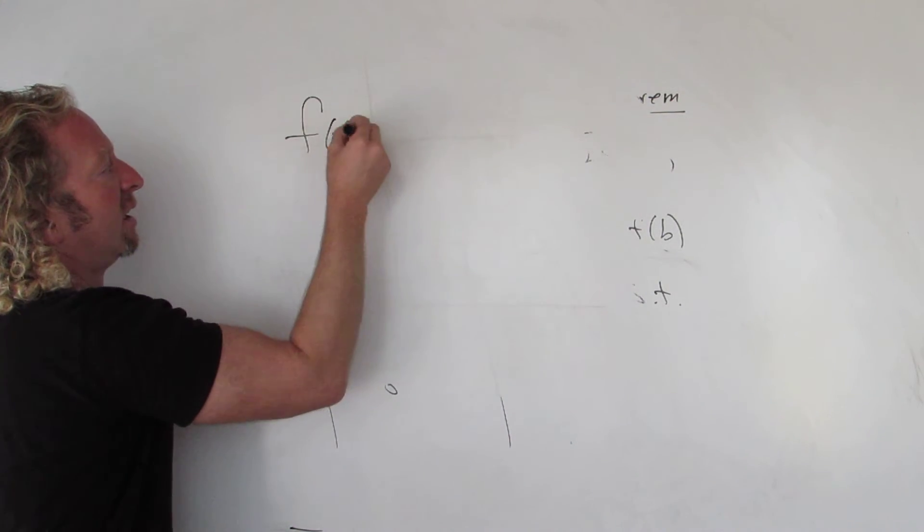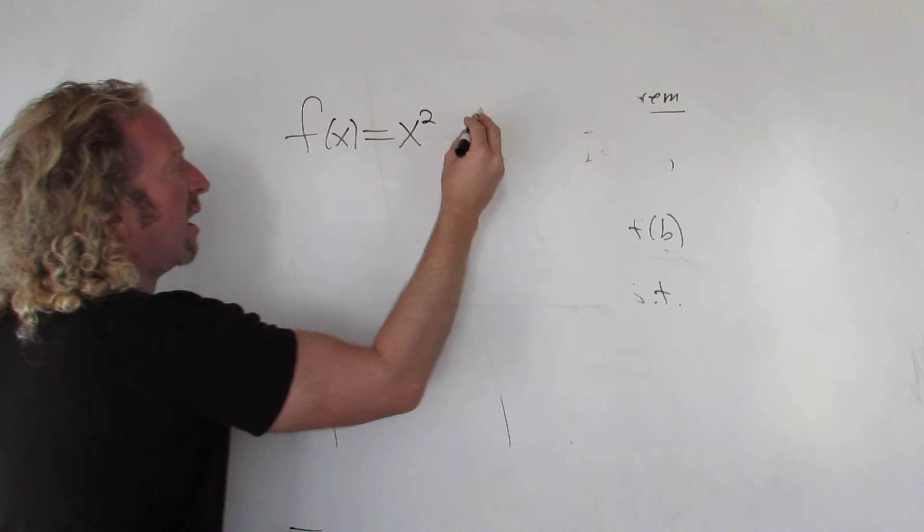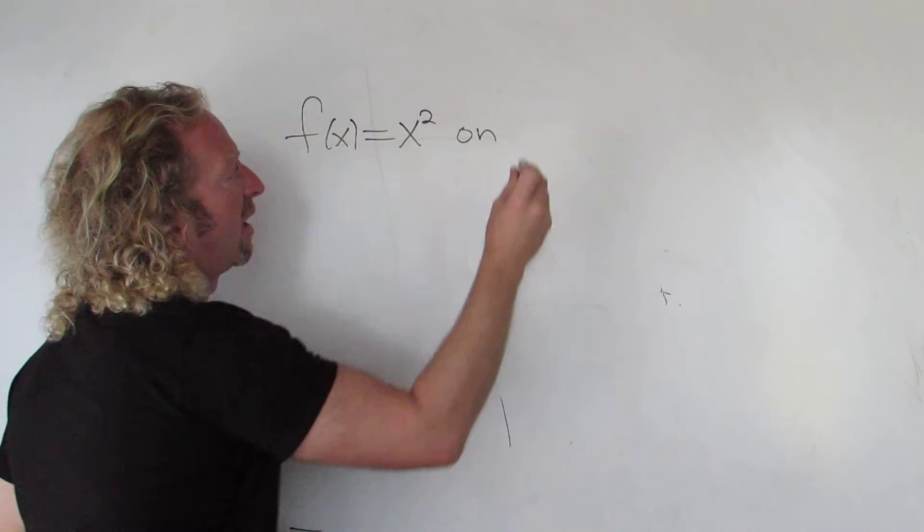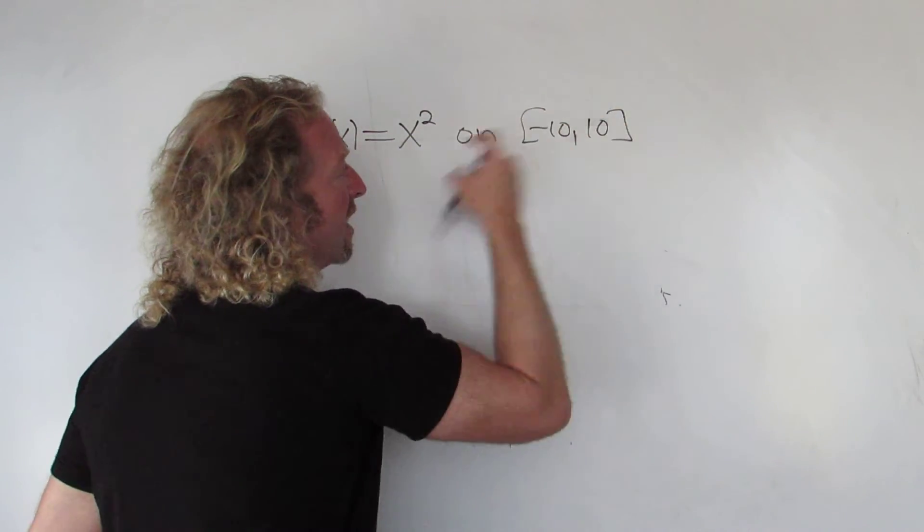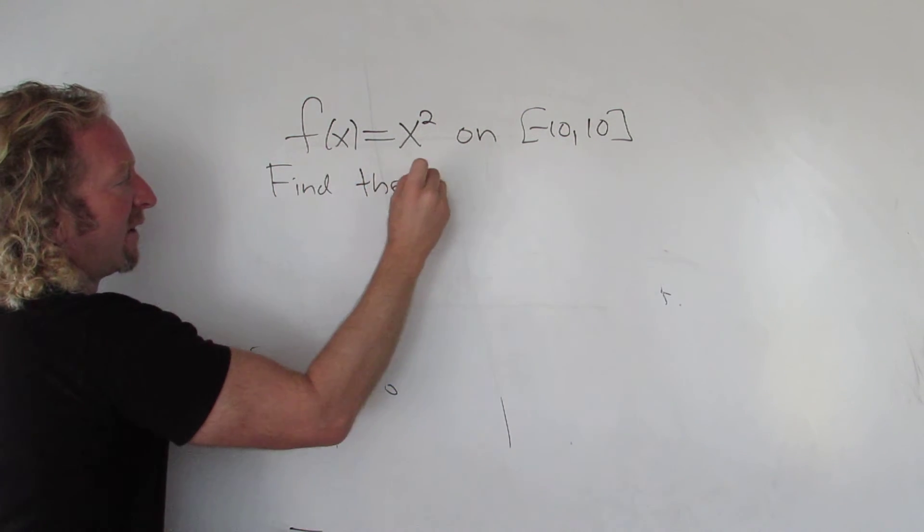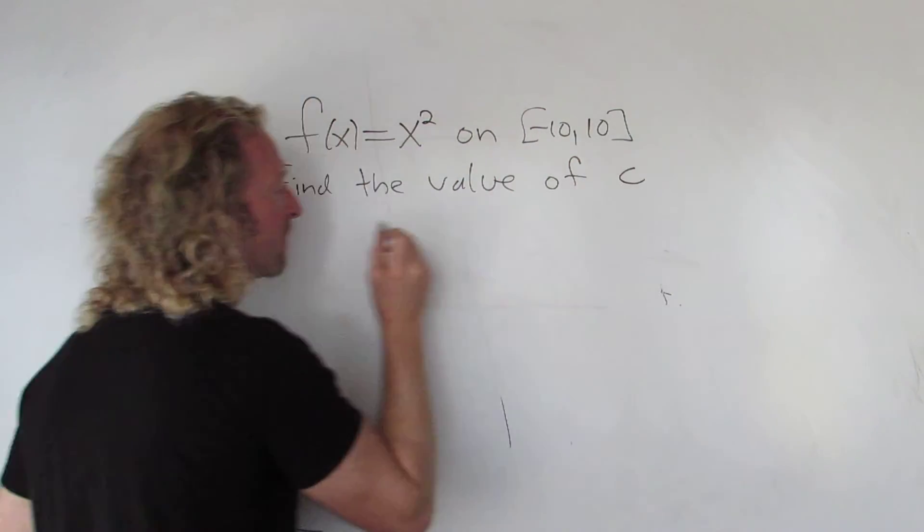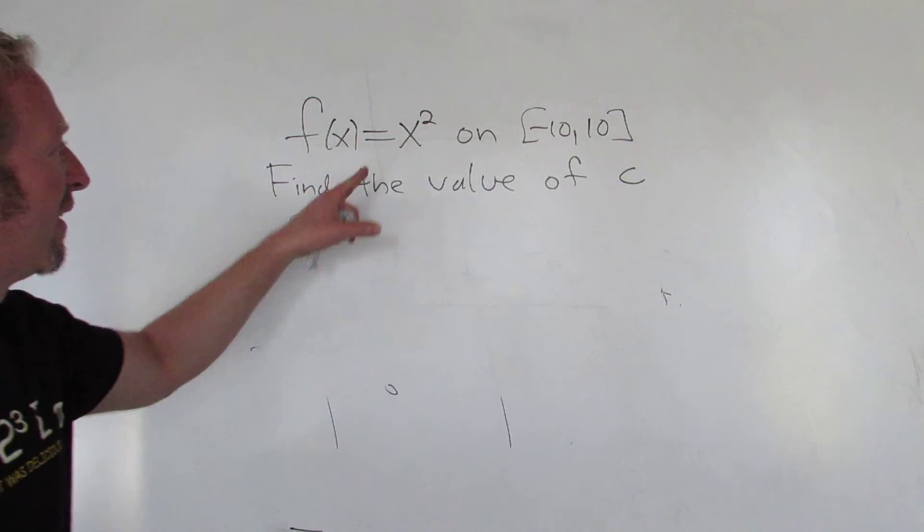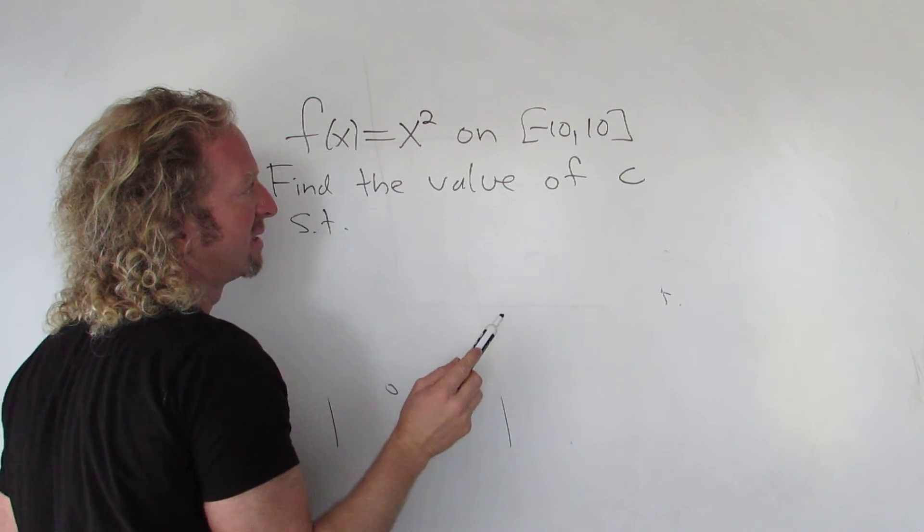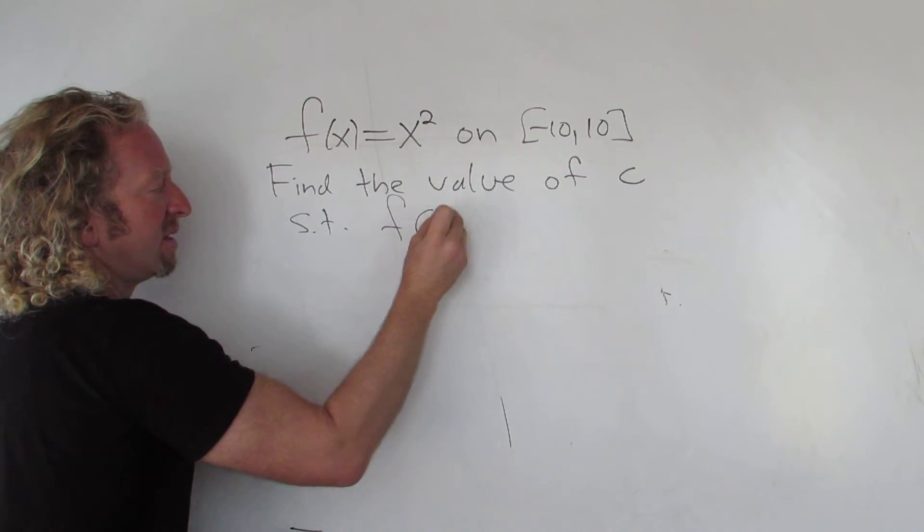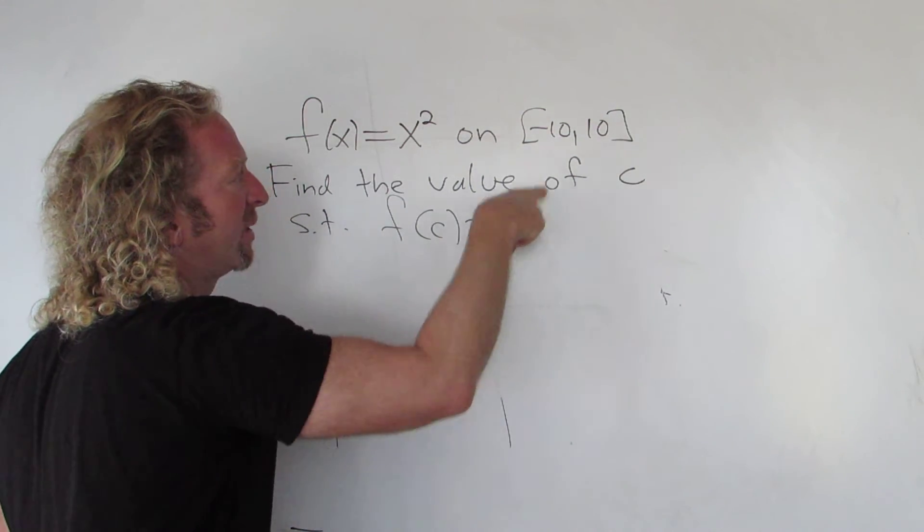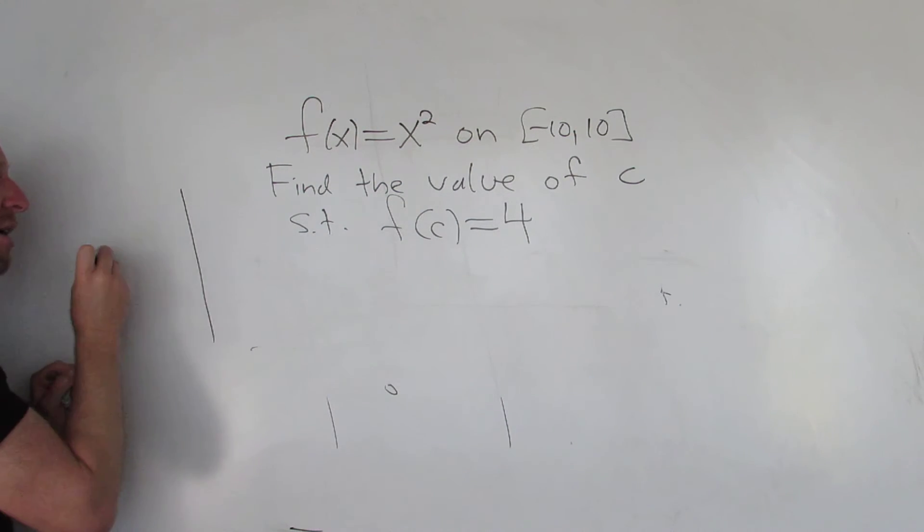So let's say we have the function F(x) = x² on the interval [-10, 10]. It's continuous. And so find the value of C such that - well, given any Y value between F(-10) and F(10), we should be able to find C, right? So such that F(C) equals, let's say, 4. That is a value between F(10) and F(-10), right?